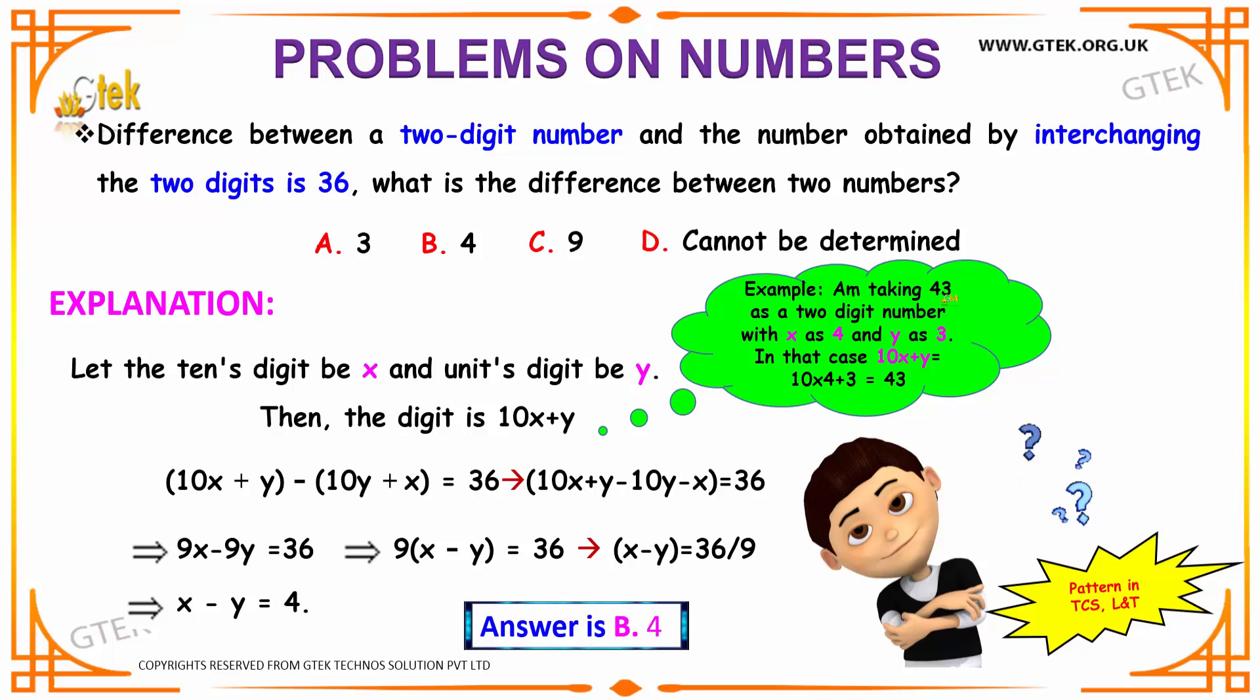Let us take a two digit number as an example. Say 43. Here we are considering our x to be 4 and our y to be 3. How can we write 43 in terms of x and y? That is 10 times x plus y will be 43. That is 10 into 4 is 40 plus 3 is 43. As you can see, you can write your two digit number as 10x plus y, where x is your tens unit and y is your digits unit.